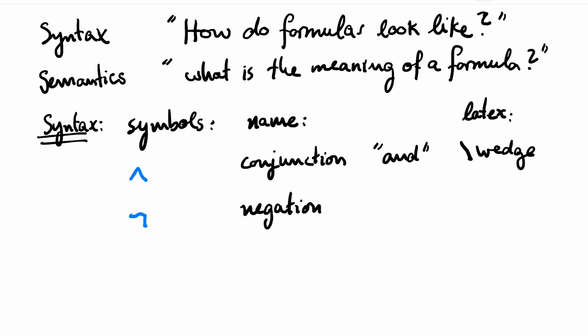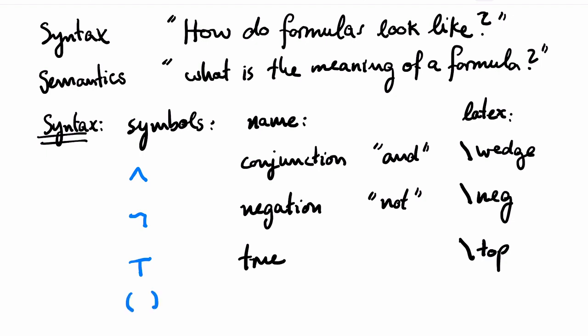Then there's a symbol called negation, pronounced NOT, which you get in LaTeX by writing backslash neg. And a symbol TRUE, which you get in LaTeX by writing backslash top. We also use the opening bracket and the closing bracket, which you can just type with your keyboard.